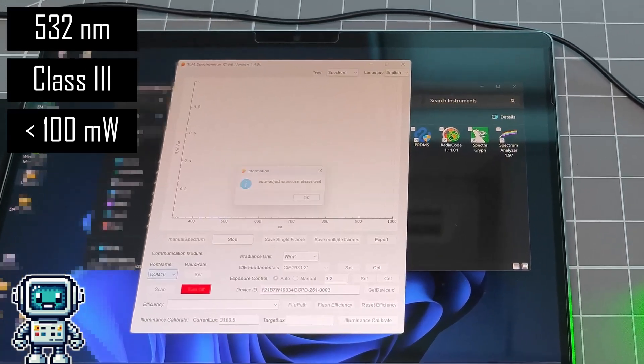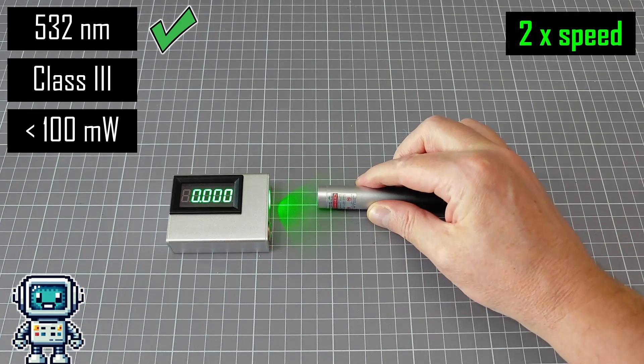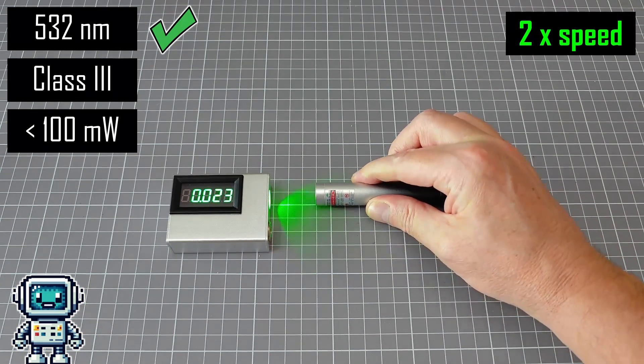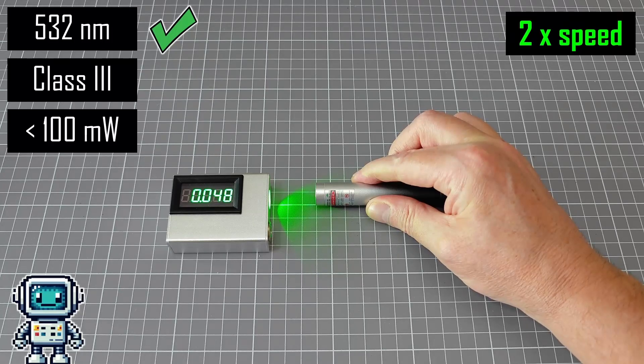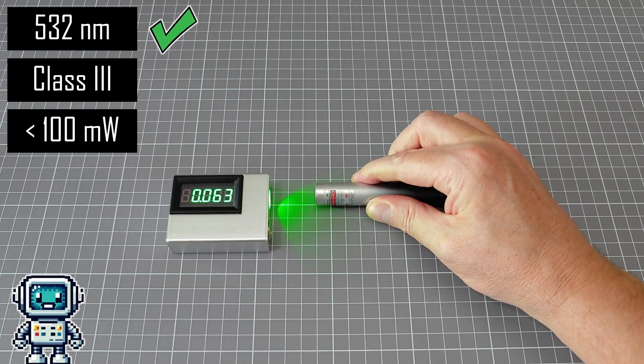Indeed, using this spectrometer, we can see that the main emission line is correct. The instructions say this device needs about 5 seconds to get a stable reading, but we found it took at least 20 seconds to stabilize. In the end, this instrument finally stabilizes at a value of about 65 milliwatts.